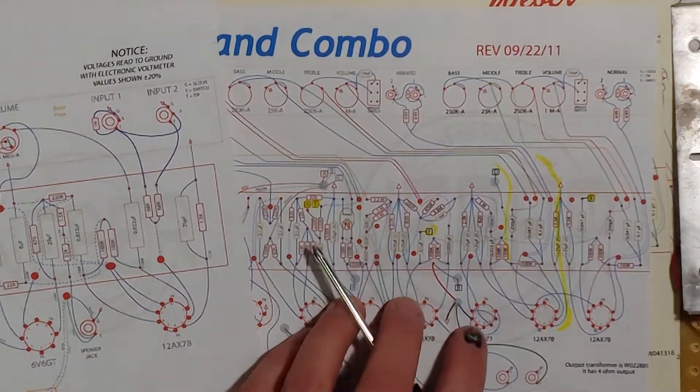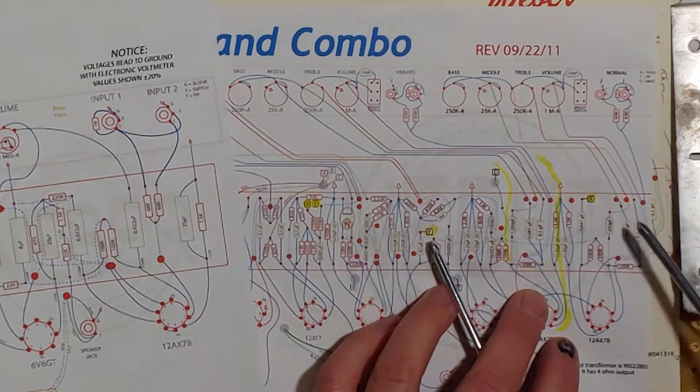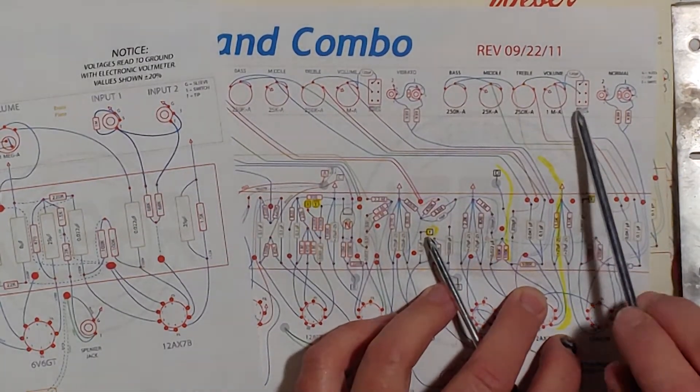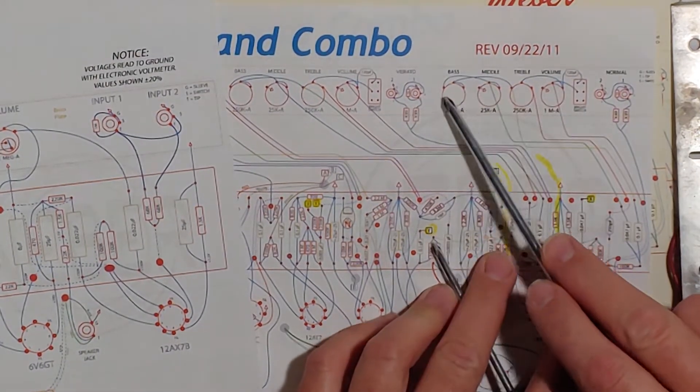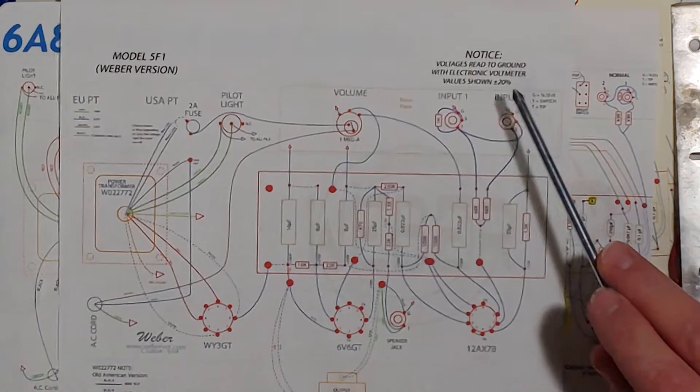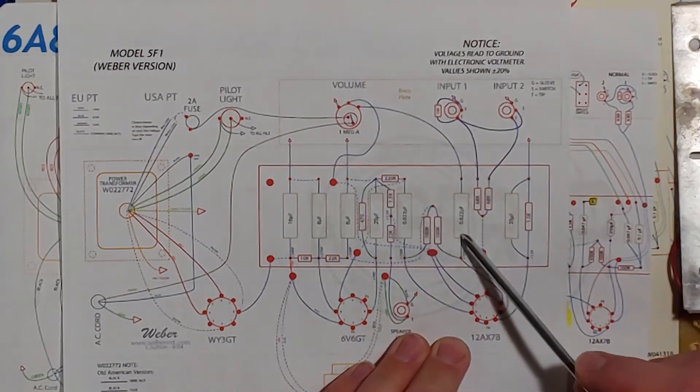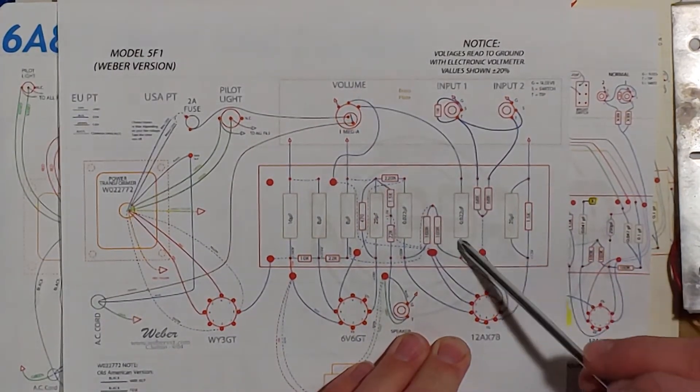Okay so we have a bright switch, a volume, a treble, a middle and a bass. Now on the 5F1 there's just a volume and here's the tone stack right here is this little capacitor.